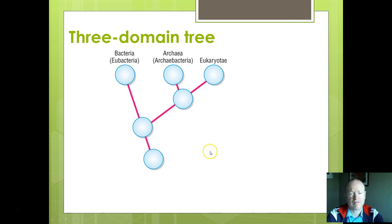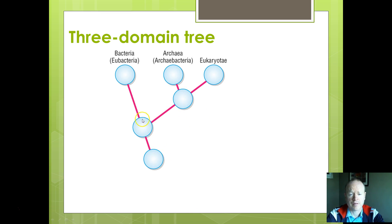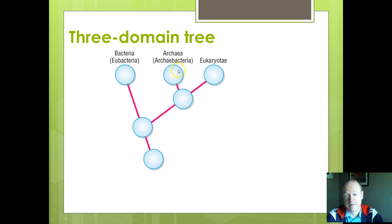Here's our three-domain tree. These phylogenetic trees show you where the branches are for a common ancestor. The branching here shows where the three domains first separated out to give you eubacteria, and then archaebacteria and eukaryotes. So we are more closely related to the archaebacteria than we are to the eubacteria.